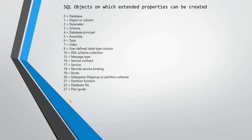You can actually insert metadata information on almost each and every object in SQL Server. These are the classes: for a database it would be class zero; object or column is one — and objects consist of procedures, tables, views, columns, triggers, and so on; parameters is two; schema is three; database principle is four; assembly is five; and so on. The list is very long — you can create metadata information on each and every object.